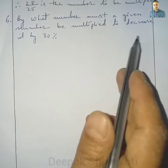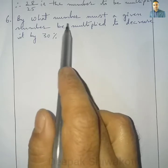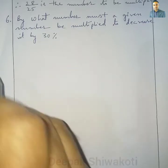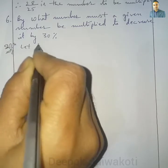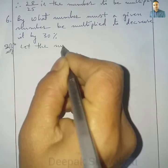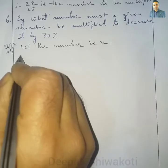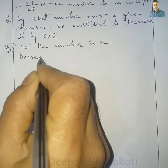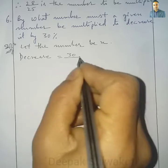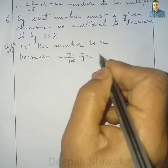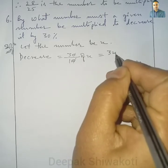Question number 6: By what number must a given number be multiplied to decrease it by 30%? We need to find this number. Let the number be x. It is decreased by 30%, so the decrease value is 30% of x, which equals 3x by 10.